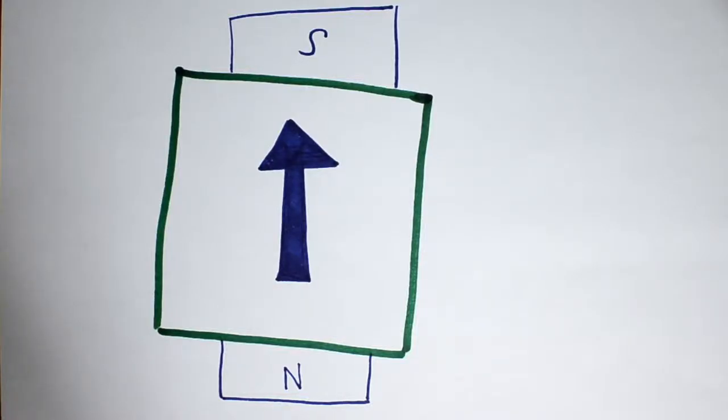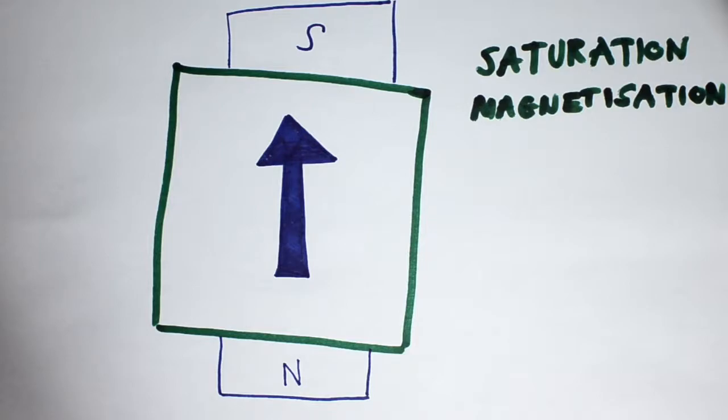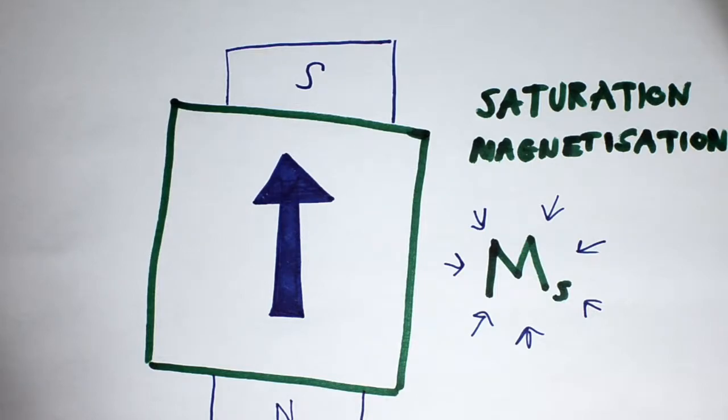As the magnetising field increases, the domains that are aligned with the field start to dominate, and the magnetisation of the material will continue to increase. The magnetisation of the material has now reached its maximum, also known as the saturation magnetisation.